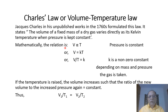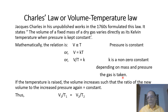Mathematically, the relation is written as V ∝ T. Removing the sign of proportionality, we get V = kT, where k is a non-zero constant depending on the mass and pressure of the gas taken. This can also be written as V/T = k.